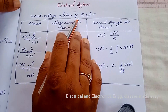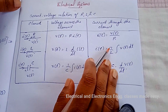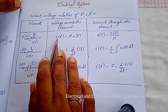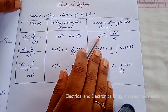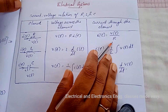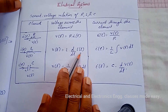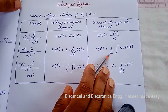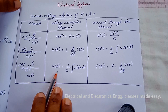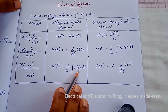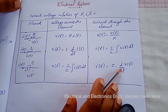The current-voltage relations of resistor, inductor, and capacitor are given here. For a resistor: v(t) = R·i(t), and i(t) = v(t)/R. For an inductor: v(t) = L·d/dt·i(t), and i(t) = (1/L)∫v(t)dt. For a capacitor: v(t) = (1/C)∫i(t)dt, and i(t) = C·d/dt·v(t).